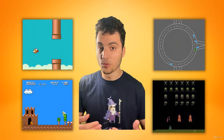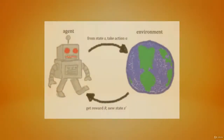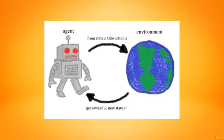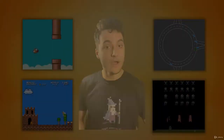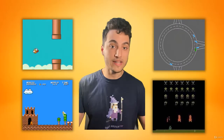Reinforcement learning is simply rewarding agents for positive behavior and punishing them when they perform a negative action. Through many iterations, you can create some very intelligent agents that can perform a widespread variety of tasks.